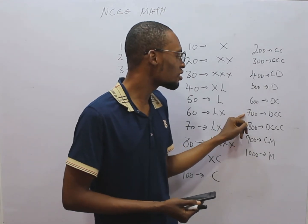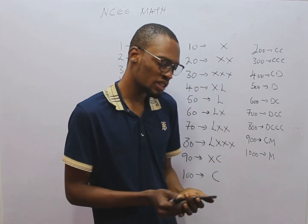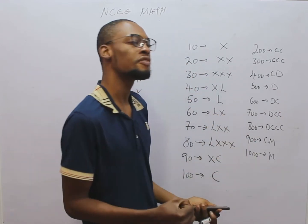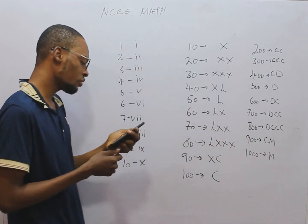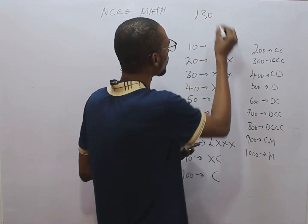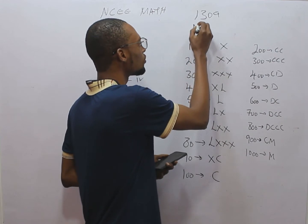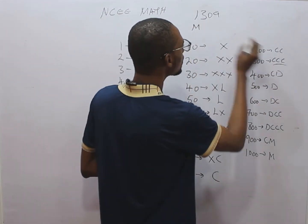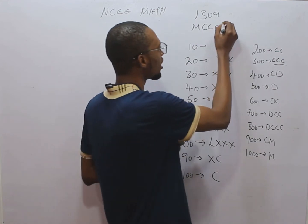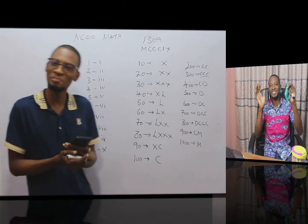600 is DC, 700 is DCC, 800 is DCCC, 900 is CM, and 1000 is M. So 1050 is ML, and 1053 is MLIII. Now we are given 1309. What is 1000? M. What is 300? CCC. What is 9? IX. So 1309 is MCCCIX — it is that simple.